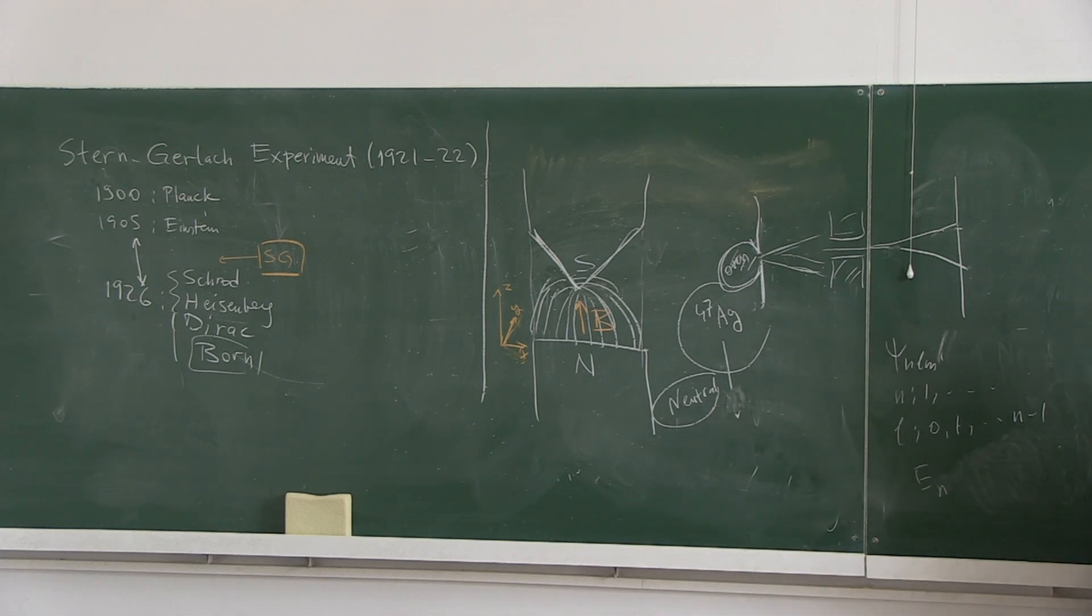Energy is labeled by N, the principal quantum number. But the wave function is labeled by NLM. Therefore, if you count the degeneracy, there is N squared degeneracy. For each N, there are N squared many wave functions corresponding to this level.